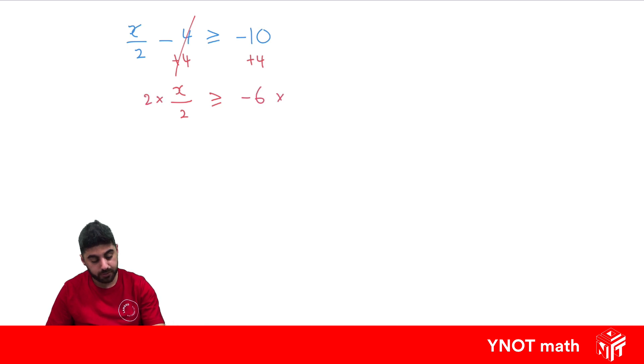It's times both sides by 2. They cancel out with that denominator. So x is going to be greater than or equal to minus 12.